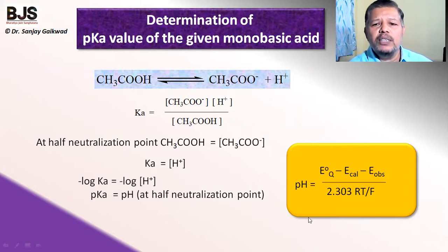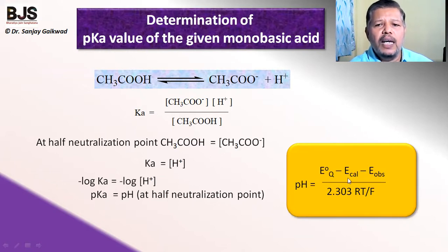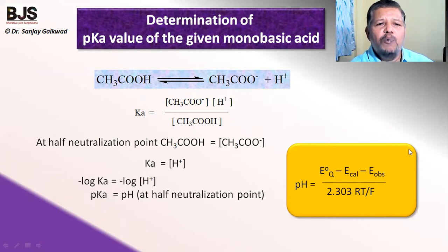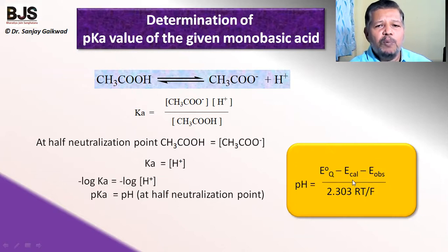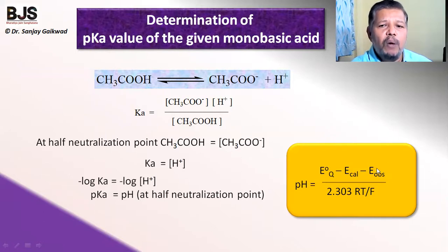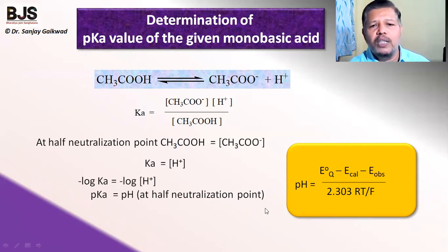For this, we use the formula: pH = (E_eq − E_cal − E_observed) / (2.3RT/F). With the help of this formula, we measure E_observed. We can calculate E_cal using standardization of the potentiometer and a buffer — potassium hydrogen phthalate. From the observed EMF, we calculate the pH, and the pH at the half neutralization point is the pKa value of the acid.